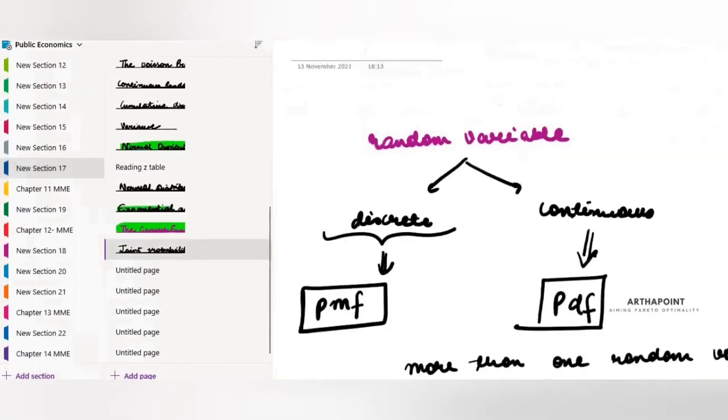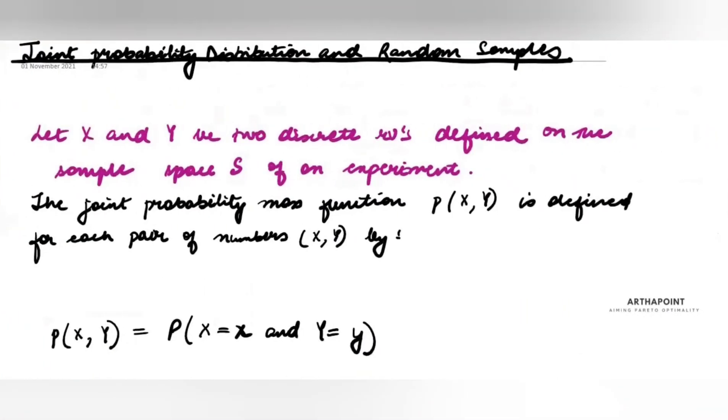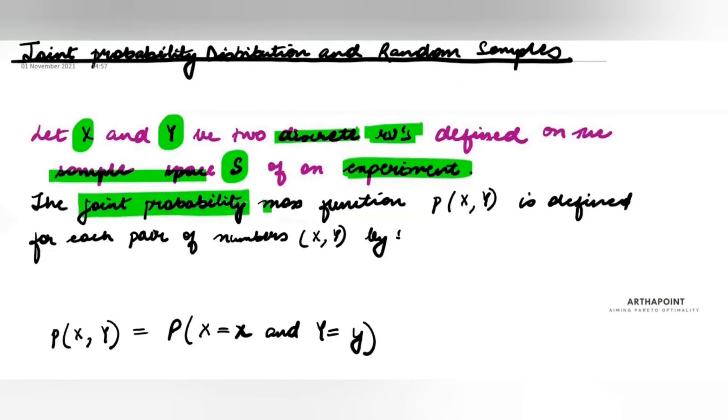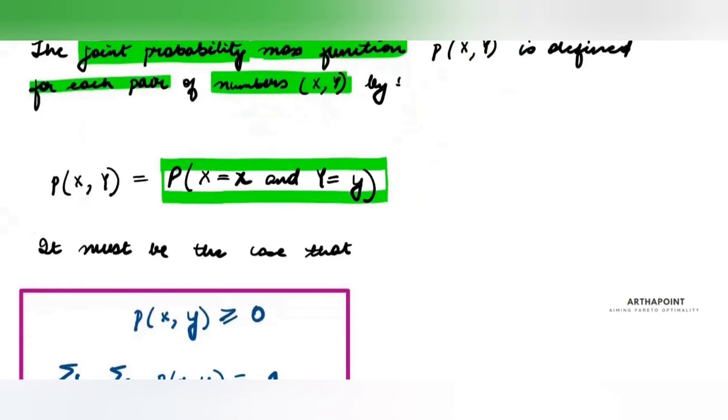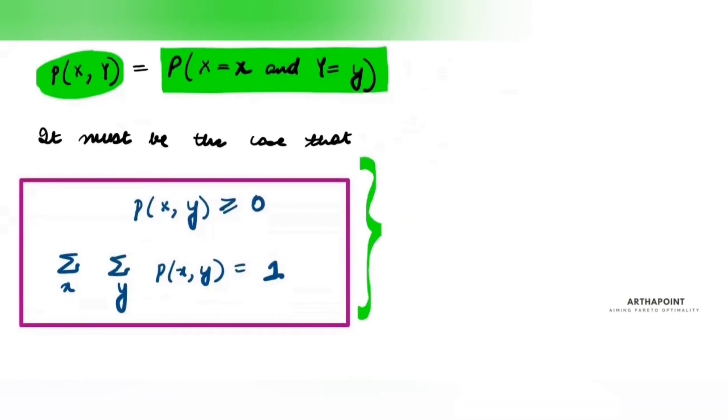Let me give you the definition. Let X and Y be two discrete random variables. They are defined on the sample space S of an experiment. The joint probability mass function is defined for each pair of numbers X,Y by what is the probability that X takes a certain number and that Y takes a certain number. Also, it should satisfy these properties that each probability should be positive and the sum of the probabilities should equate to 1.